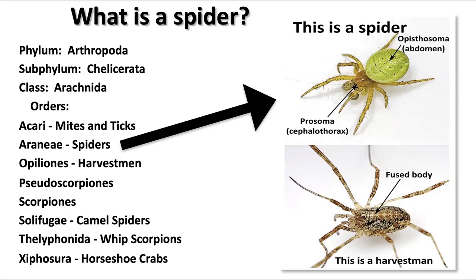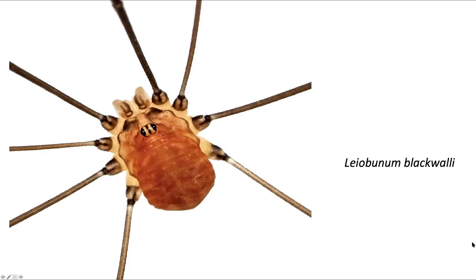If you think about what a mite looks like or a scorpion, all of these orders have something in common except for spiders — they all have a fused body, so their body is one piece with their legs attached to it. Spiders are different because they have two portions to their body: the prosoma or cephalothorax, which has the head and eyes, and then the abdomen, which is the opisthosoma. All of the other animals in this group share this merged body plan.